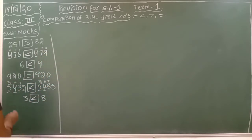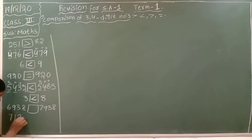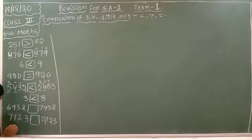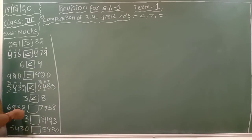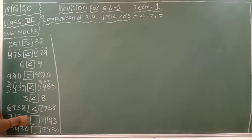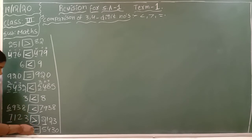One more question: 6938 and 7938. Both are 4-digit numbers. Check the 1000s place: 6 and 7. Which is the big number? 7 is the big number, so big number side opens. Another: 7123 and 2123. Also 4-digit numbers. Check 1000s place: 7 and 2. 7 is the big number, so big number side opens. When both numbers are equal on all sides, use the equal to symbol.